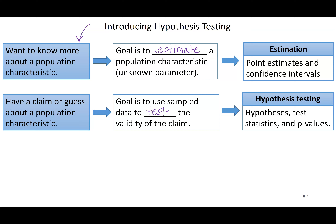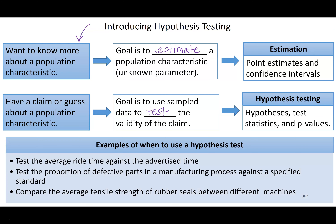We're going to set up hypotheses, test statistics, and use those to calculate p-values. Some examples: I might want to test the average write time against an advertised time, or test the proportion of parts that are defective in a manufacturing process compared to a standard. A lot of places, if the proportion of defective products goes above a certain level, that indicates we need to stop the process and recalibrate the machine. Those are just a couple of reasons we might use a hypothesis test.